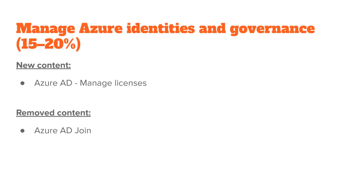The first major section, 15 to 20%, has to do with Azure identities and governance. There are only two minor changes to this entire section. First, they've added content relating to managing Azure Active Directory licenses. They have actually removed content around AD join. So that is the big change for the first section.